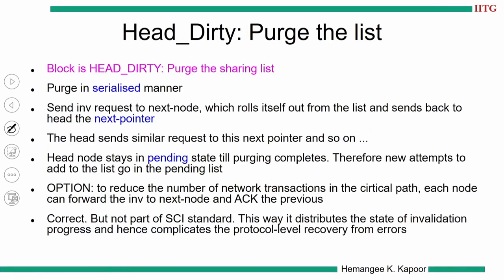Once the node is in head dirty state, we have to purge the list. Purge works in a serialized fashion because we cannot delete the full list in one go — we delete one node at a time. The head communicates to the next node, that node deletes itself, then the head connects to the node after it, and so on. We send the invalidation request to the next node, which rolls itself out and gives the next pointer. Now the head points to the following node and deletes it, continuing one by one.